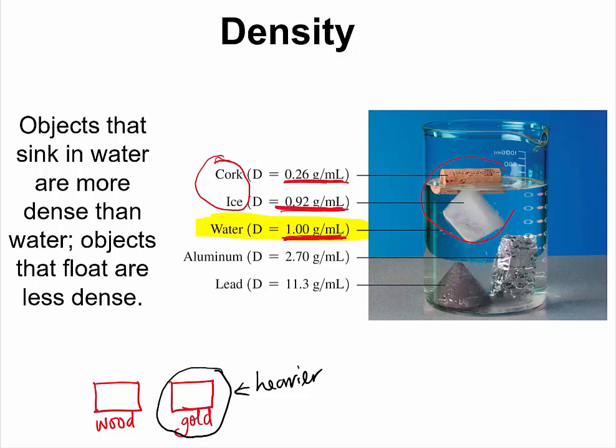And as you can see, they are literally floating. On the other hand, if you drop aluminum and lead in water, they will sink in water because they are more dense than water. And as you can see, they are right there at the bottom of the beaker.